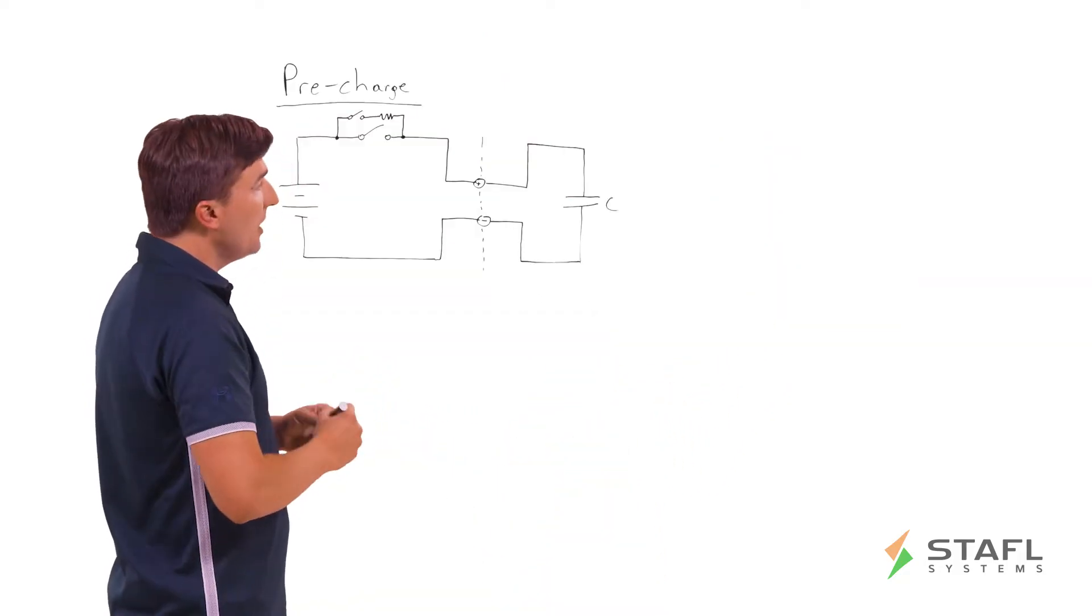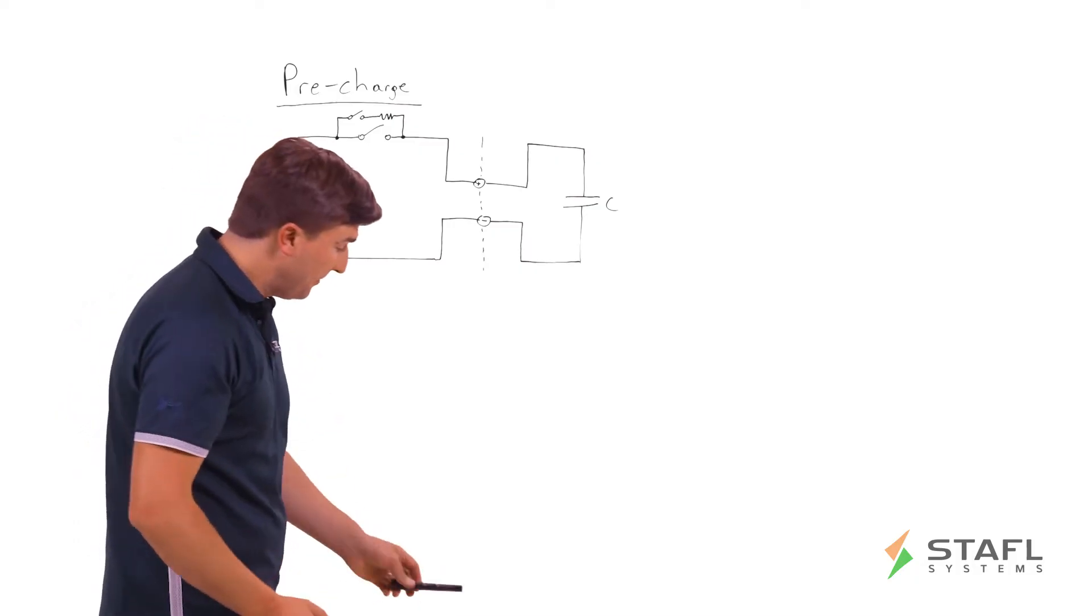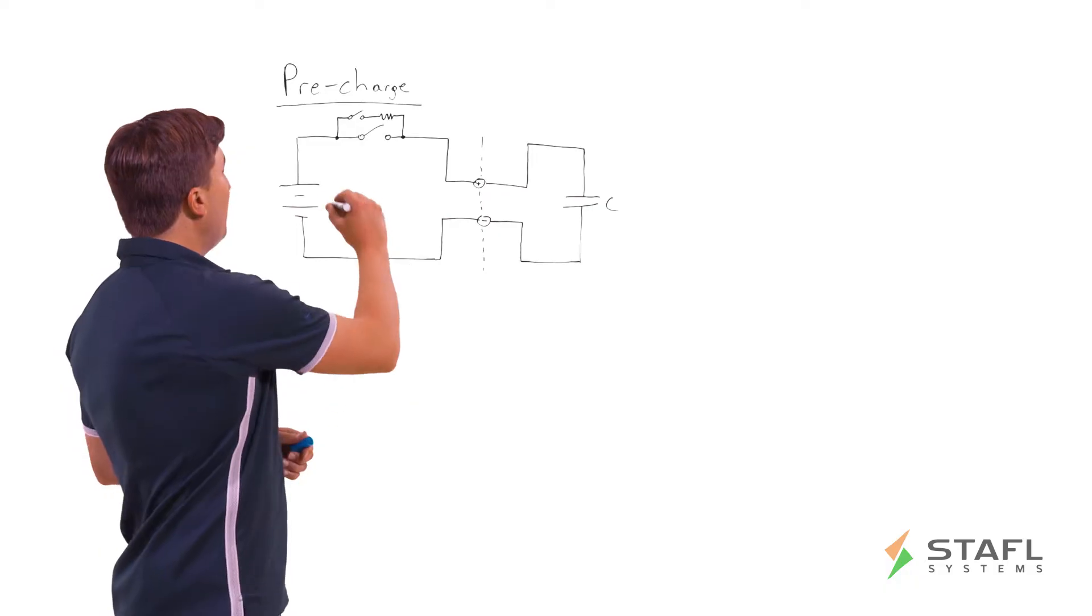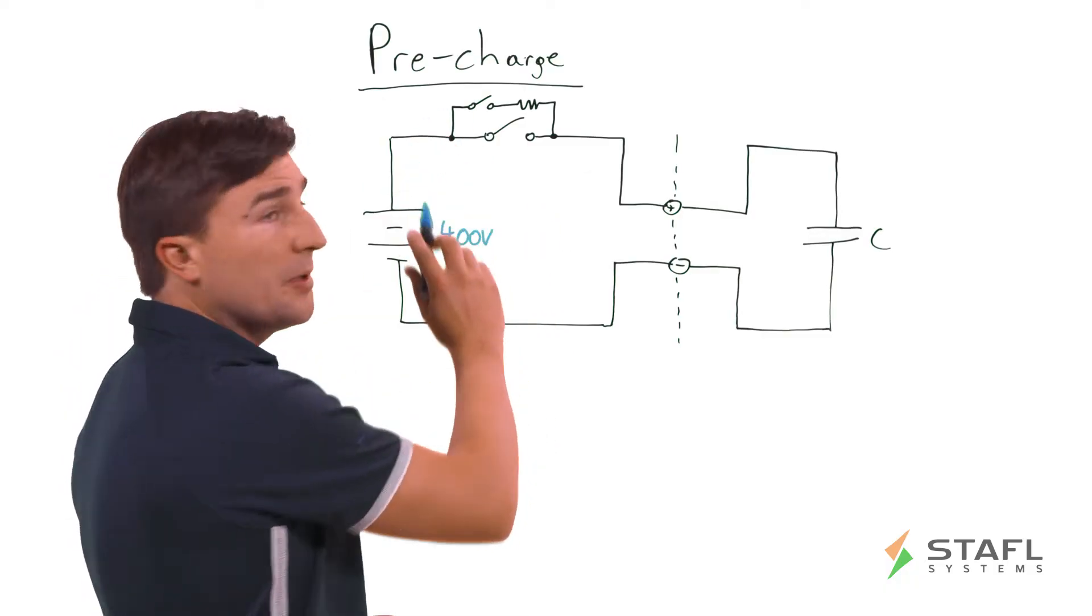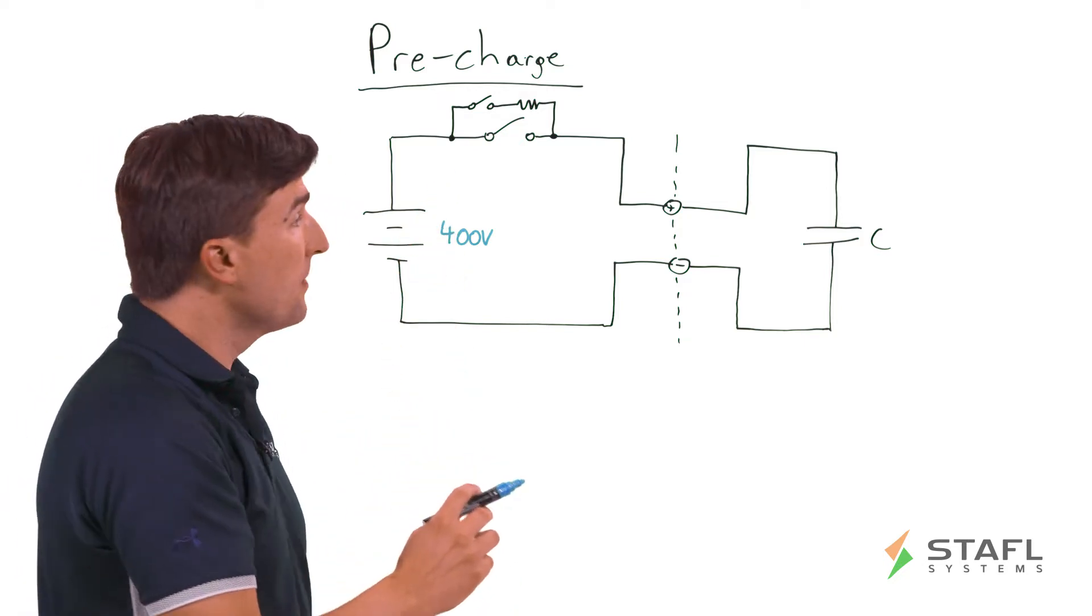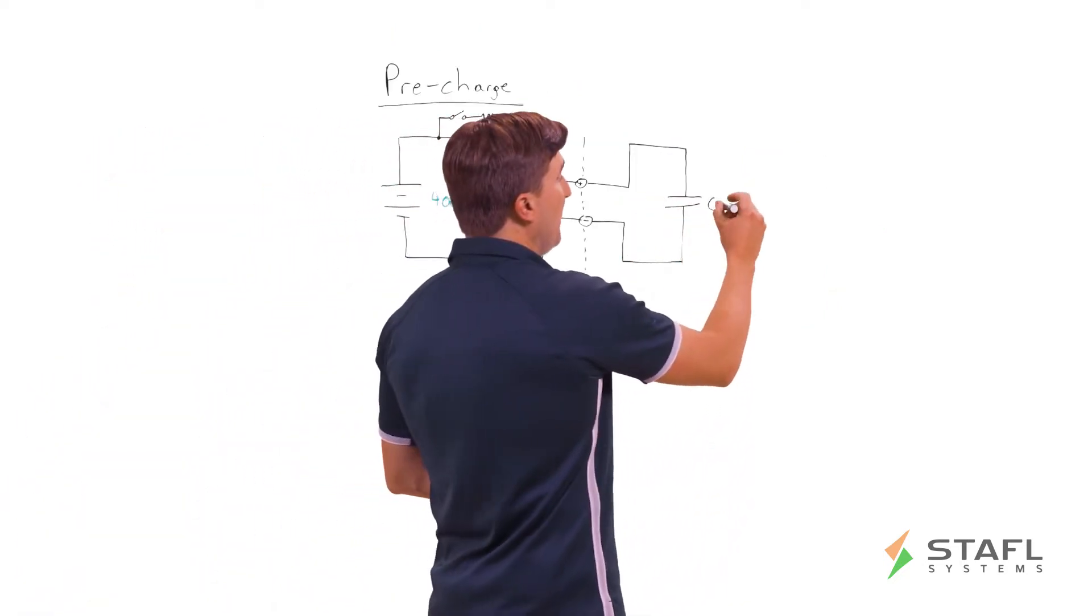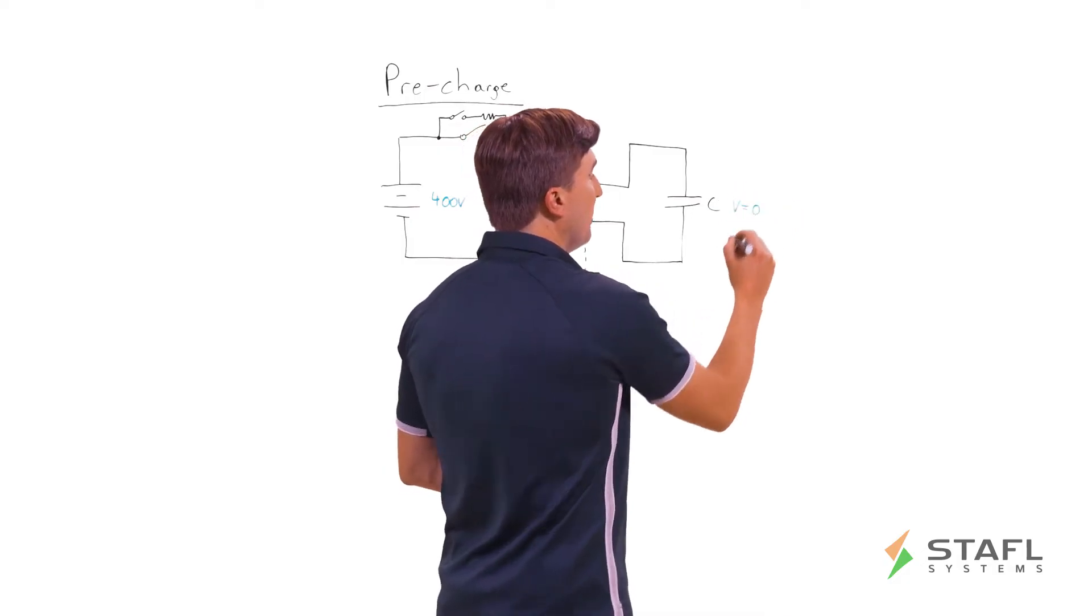Let's start with the case if we did not have a pre-charge circuit, what would occur? Well, when the battery is off, all the switches are open. And say that we're sitting at a voltage of 400 volts and the system has been off for a while, so the voltage of the capacitor is zero volts.